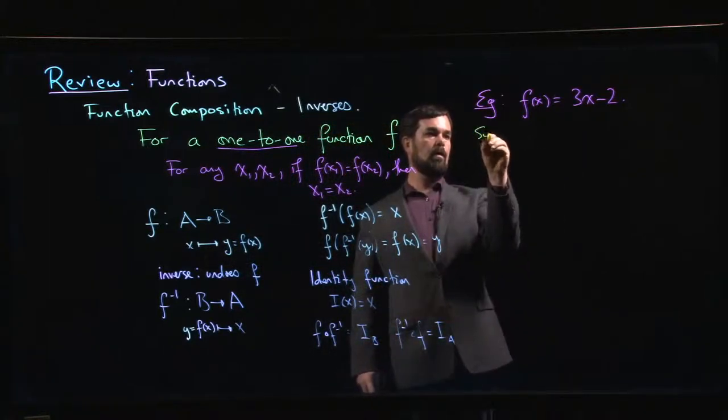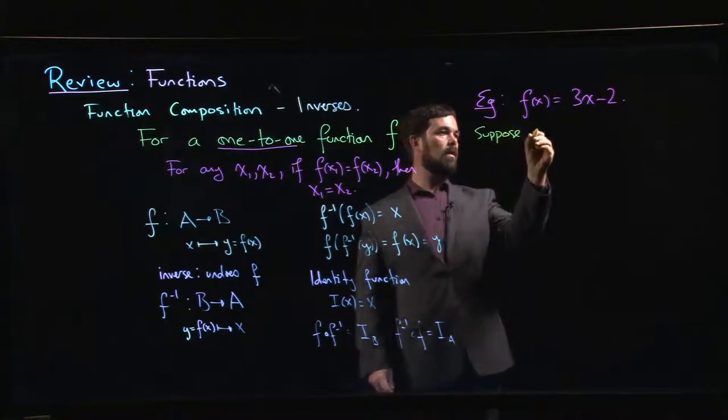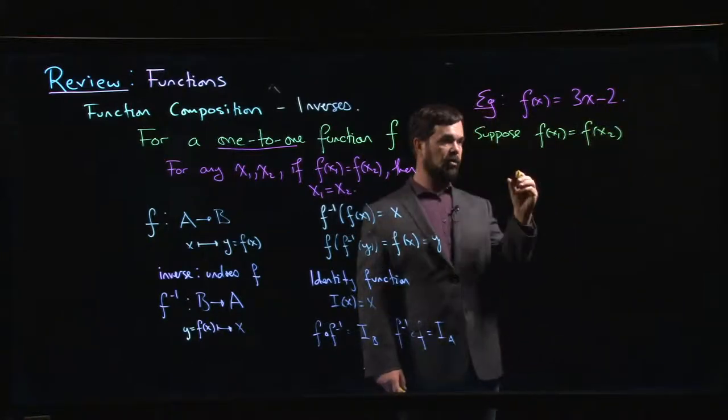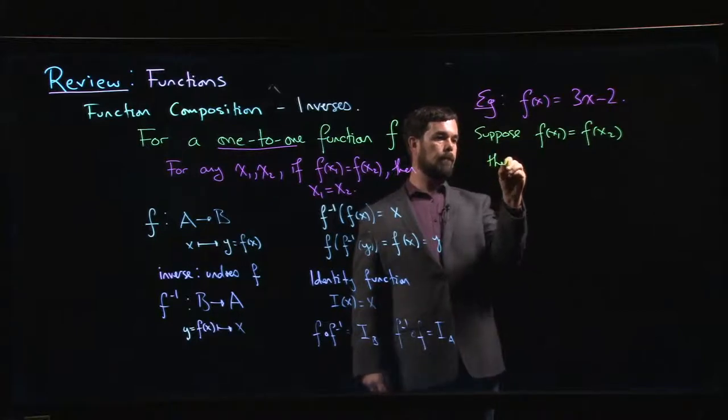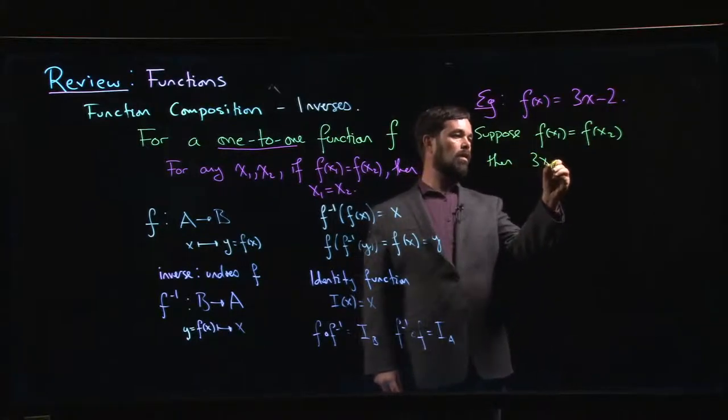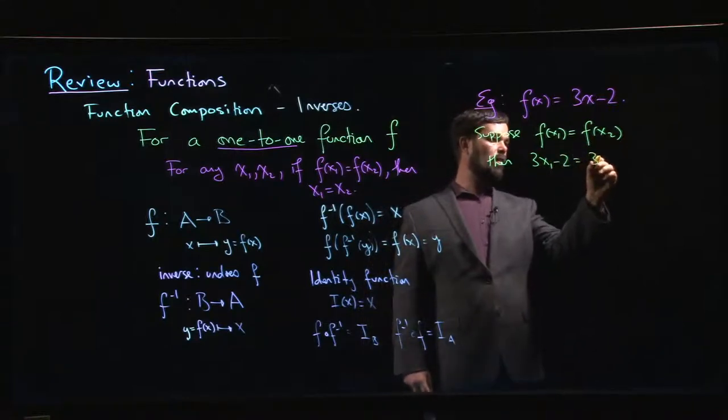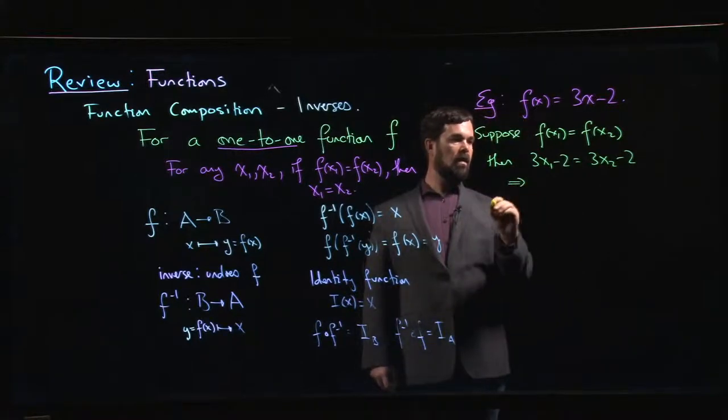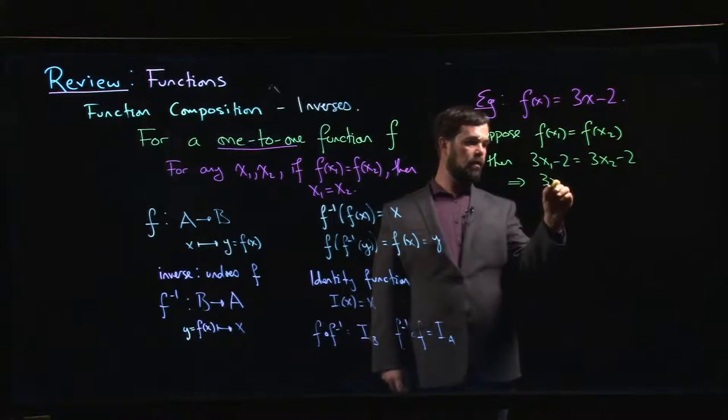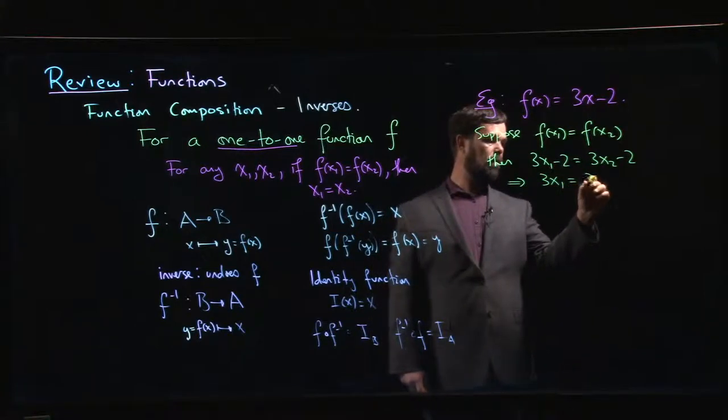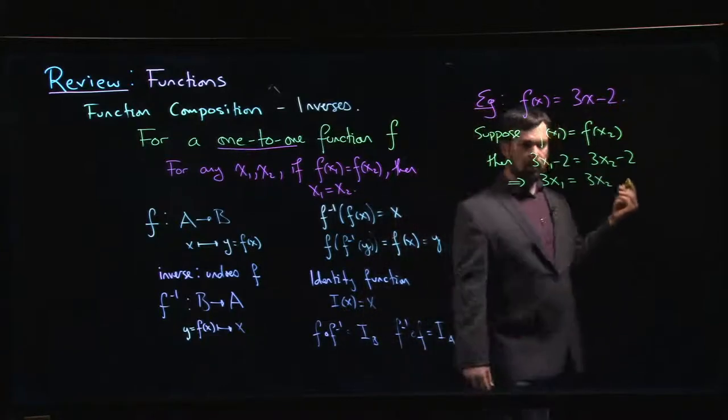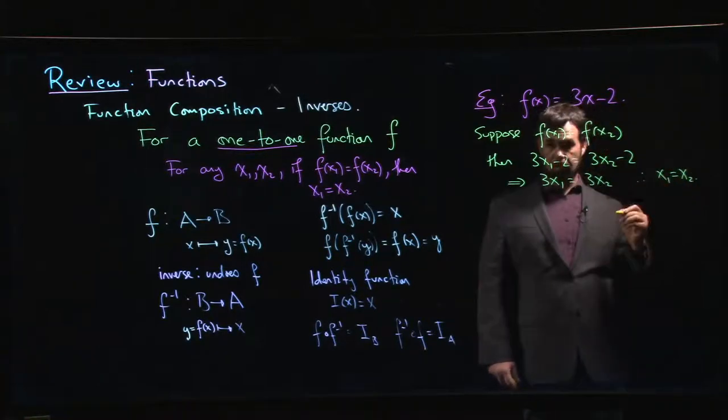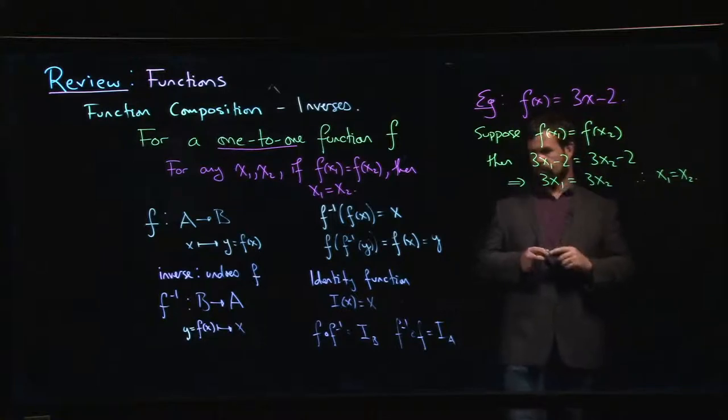The way I confirm is, we say, well, let's suppose that f of x1 does in fact equal f of x2 for some x1, x2. Well, then 3x1 minus 2 would have to equal 3x2 minus 2. And if I add 2 to both sides, 3x1 would equal 3x2. And I can divide both sides by 3. And I confirm that, indeed, x1 is equal to x2.